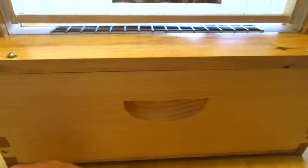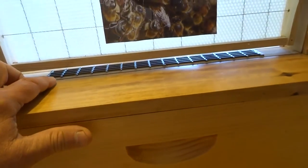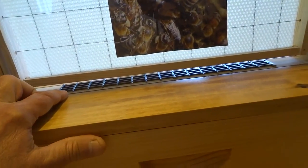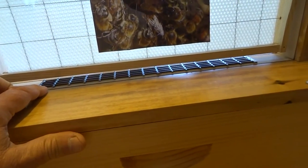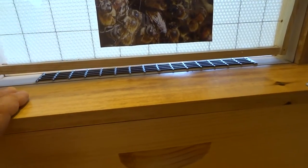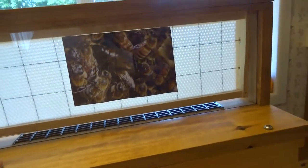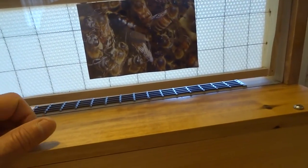It has a screen bottom board with a mite board below it, and the queen excluder here is a plastic queen excluder which we cut down from a full-size one. Just as a mock-up, we have a picture of some bees with a queen in it.